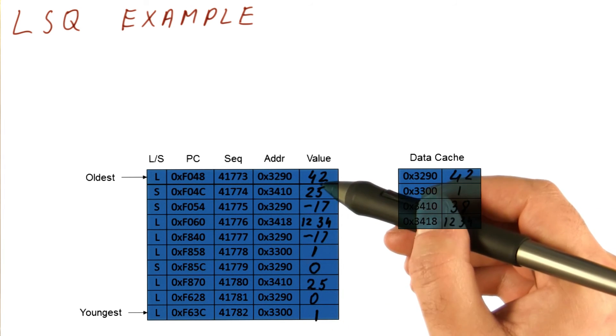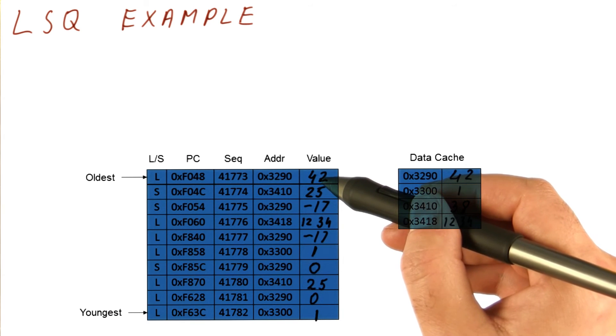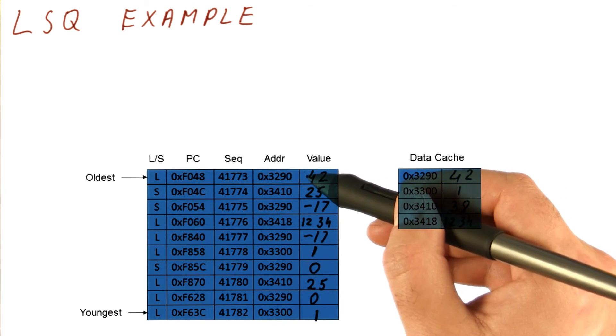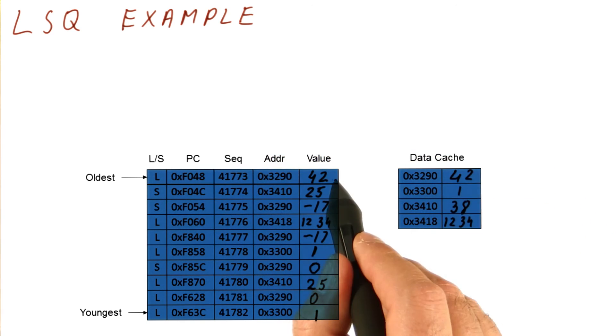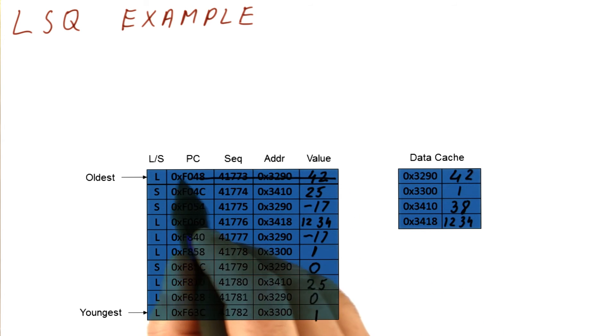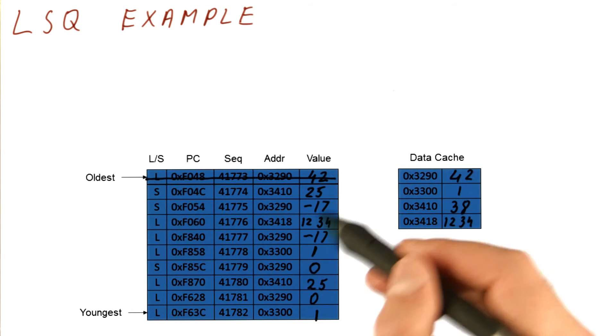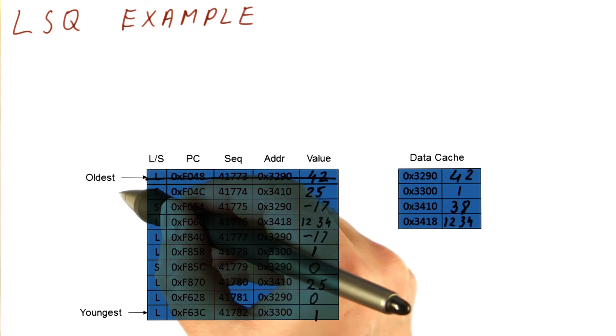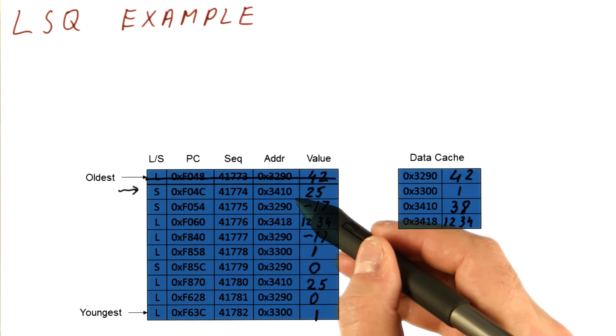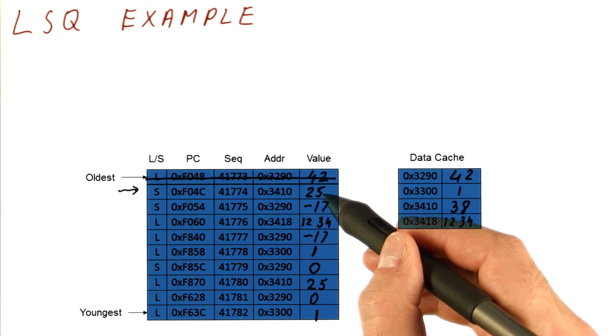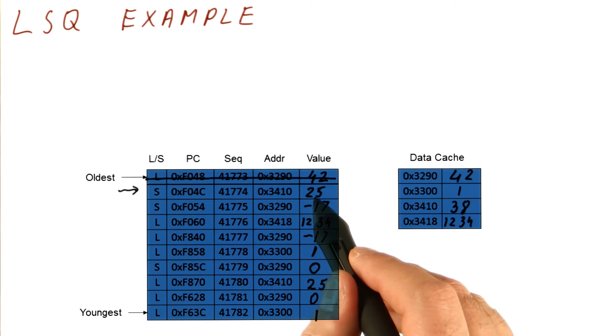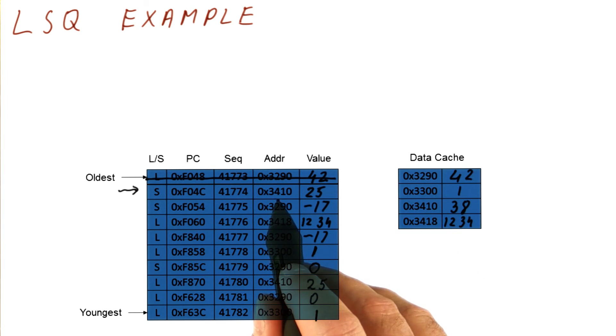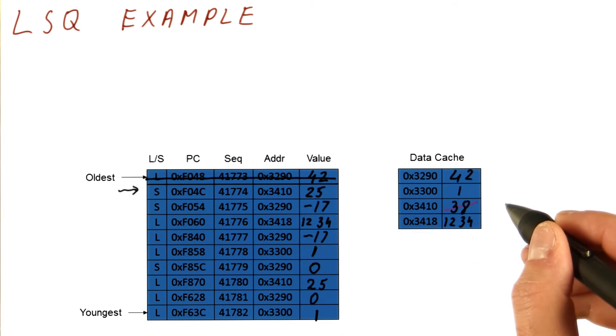Now let's say that at some point, the loads and stores start committing. So we will have this load commit. A load commits by simply copying the value to the register file. And now the oldest pointer is here. This store commits by putting the value in the cache. So now we take the value of 25 and put it in address 3410. So we override this 38 with 25.